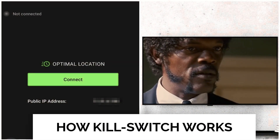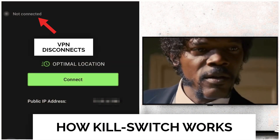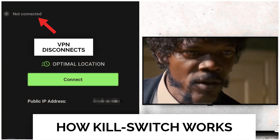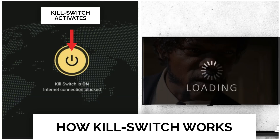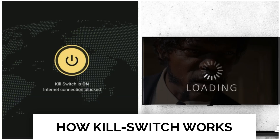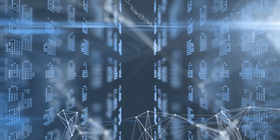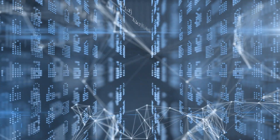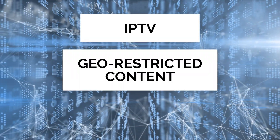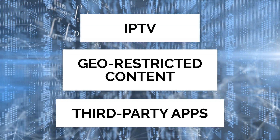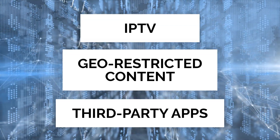How a Kill Switch feature works is: whenever your VPN disconnects unexpectedly, the Kill Switch feature takes over and turns off the internet connection immediately. This is especially useful if you're using IPTV, streaming geo-restricted content, or using third-party apps to ensure your privacy at all times.